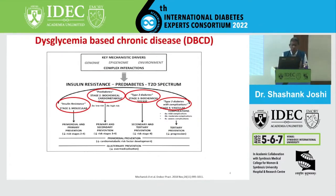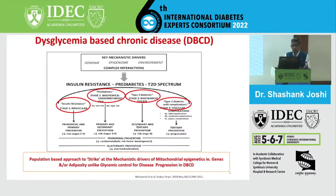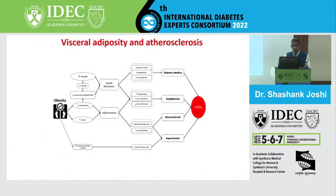It's all complex interactions of genome, epigenome, and environment. We clearly know that we need a population-based approach to strike these mechanistic drivers. There's a lot of mitochondrial epigenetics, genes, and adiposity on this whole concept of DBCD - the dysglycemia-based chronic disease.